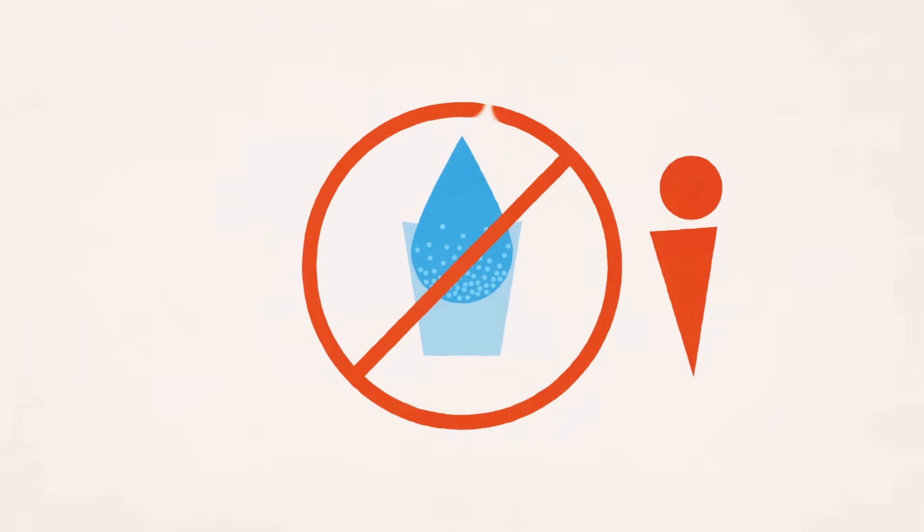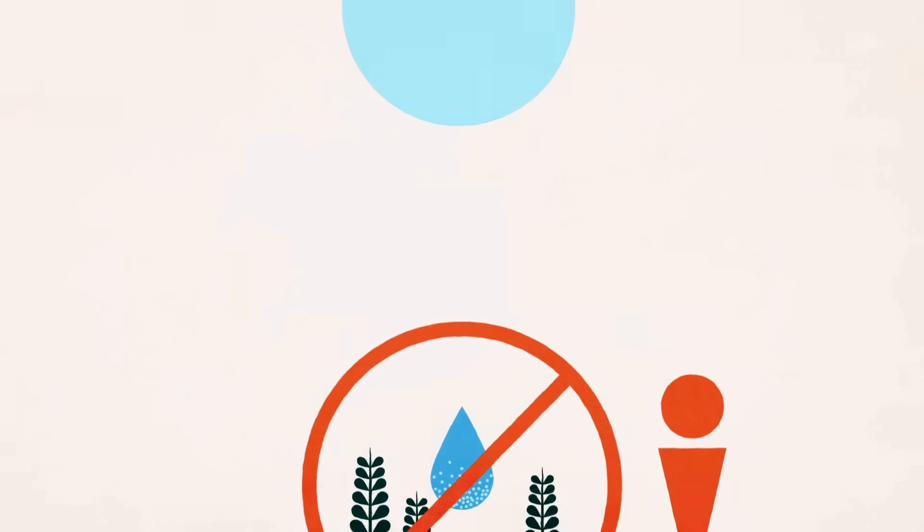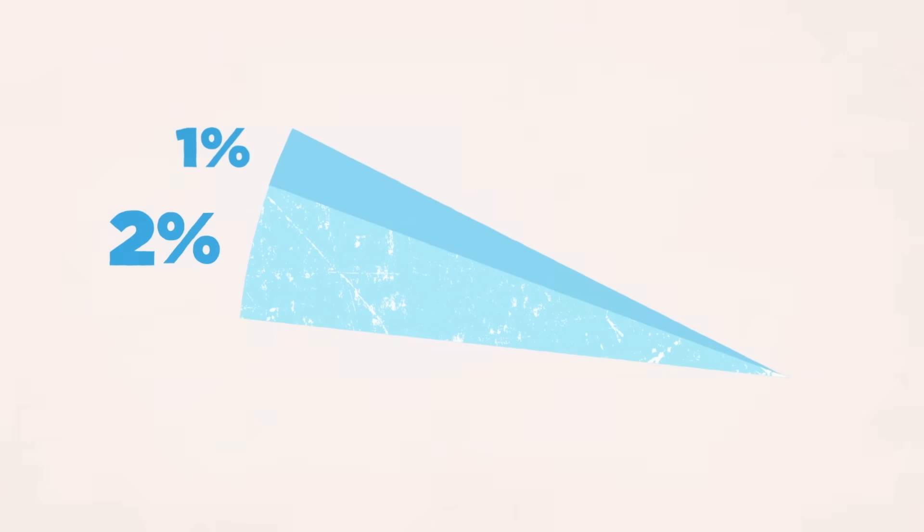97% of Earth's liquid is salt water, too loaded with minerals for humans to drink or use in agriculture. Of the remaining 3% of potentially usable fresh water, more than two-thirds is frozen in ice caps and glaciers.